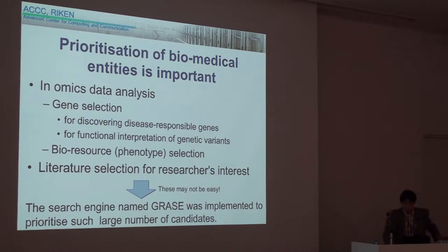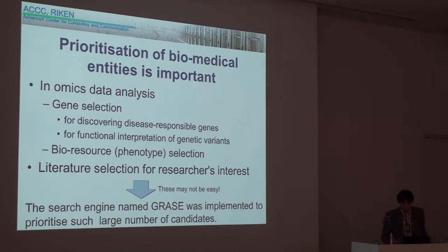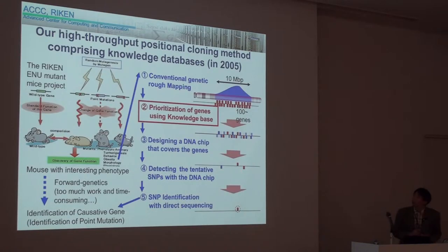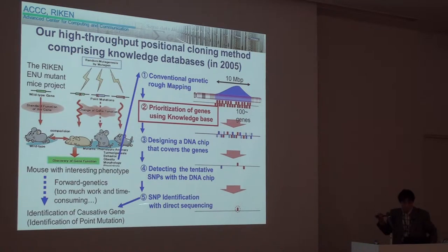To assist researchers in easy entity selection, the search engine named GRACE was implemented to prioritize such a large number of candidates. This is the first application of GRACE: in-silico positional cloning problem solving to identify a codable gene of ENU mutant mice.